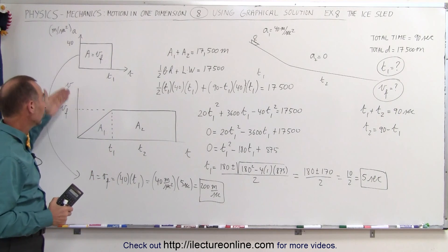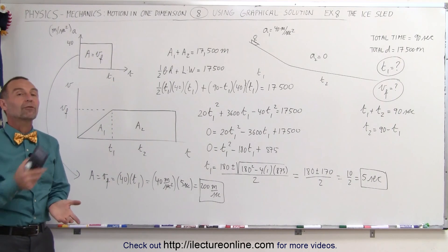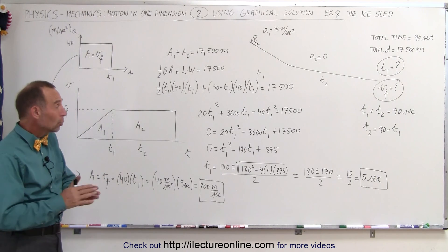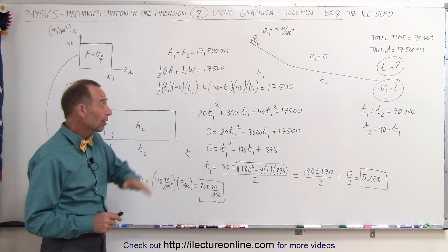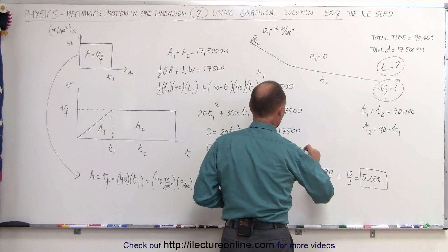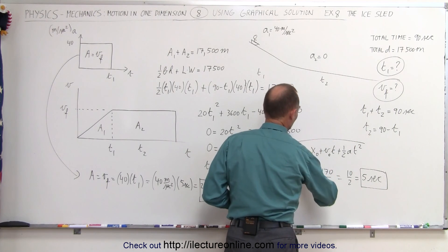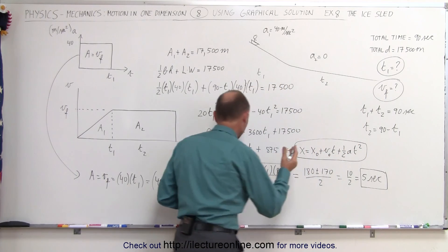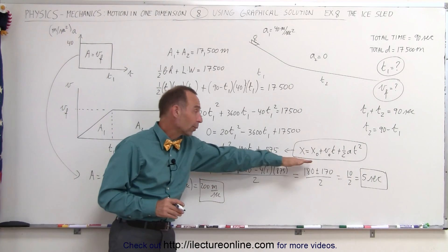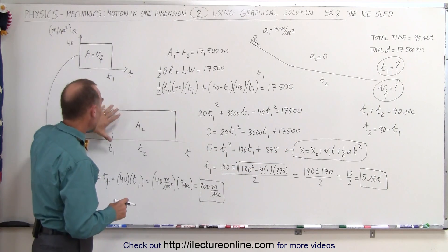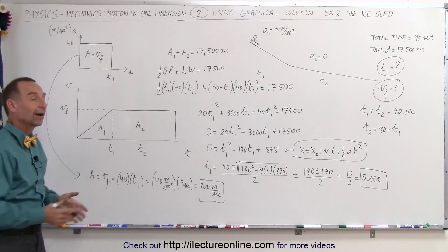Notice that using two diagrams — one acceleration versus time and one velocity versus time — it is quite simple to solve a problem like this. Also note that the equation we derived looks just like the typical kinematics equation: x equals x-naught plus v-naught times t plus one-half at squared. It's not surprising that you end up with that equation here. The only difference is that instead of starting with that equation, we started with a graph — and you get the exact same result either way.